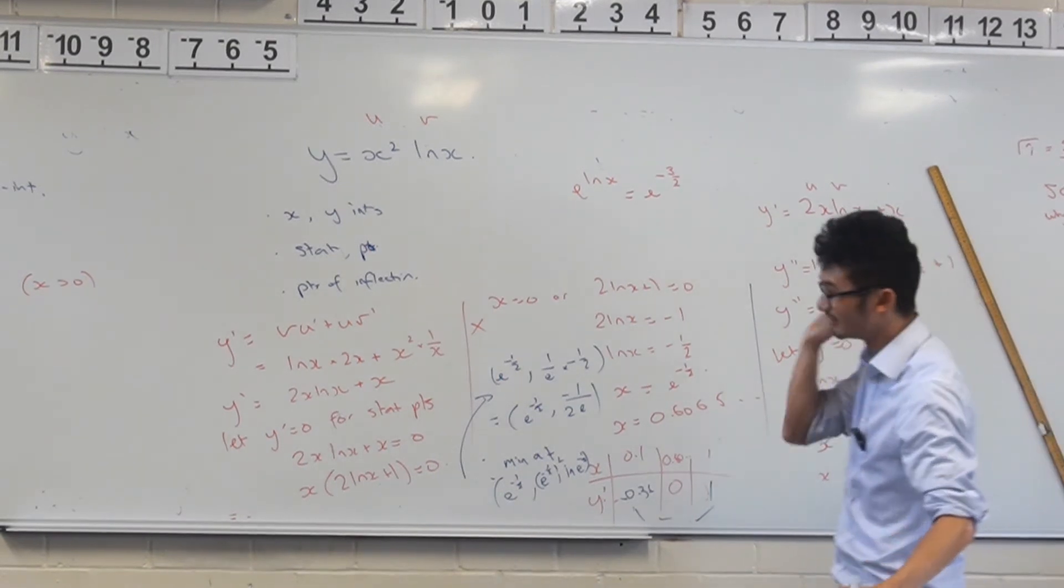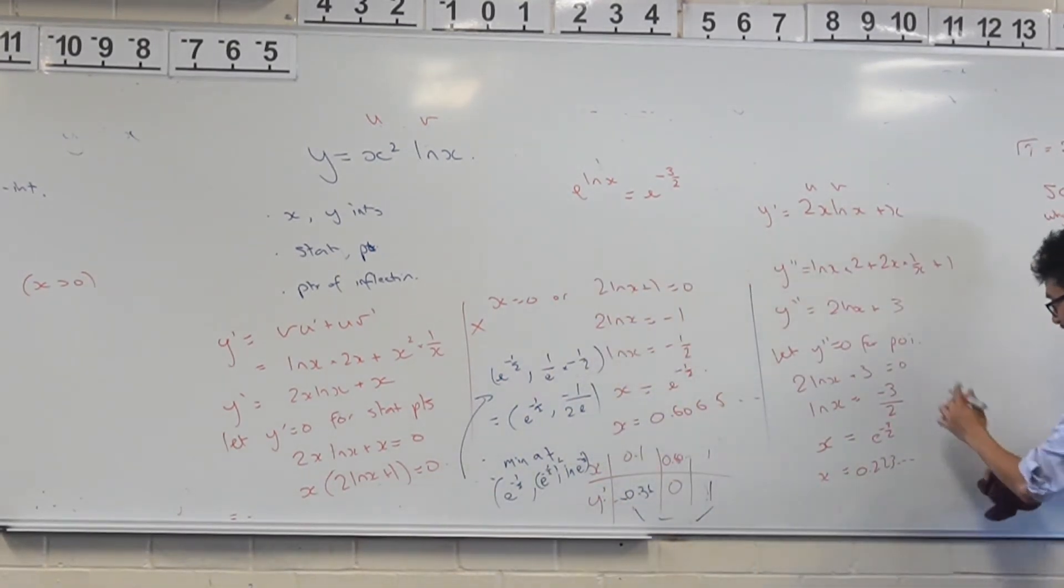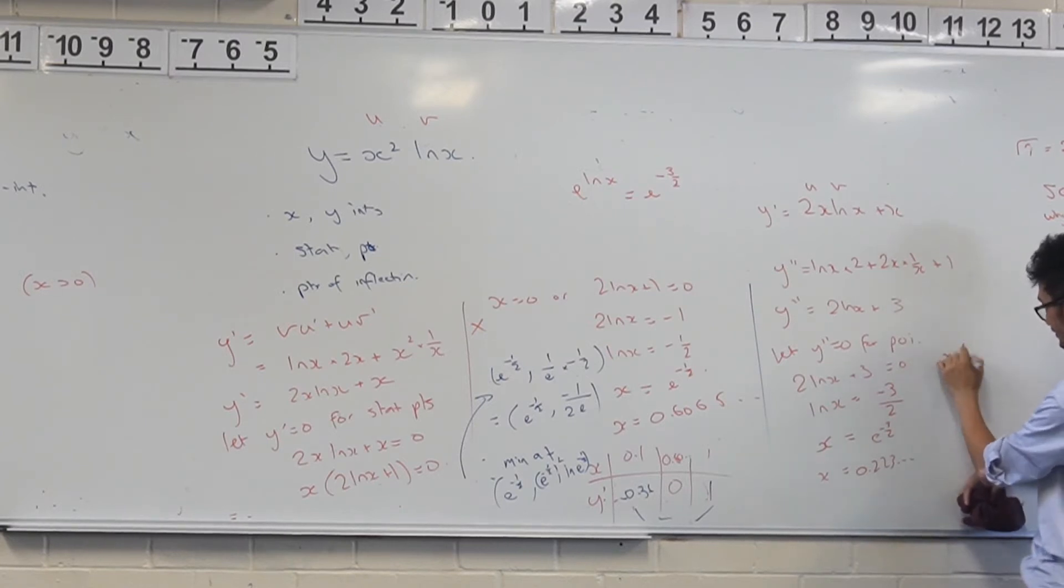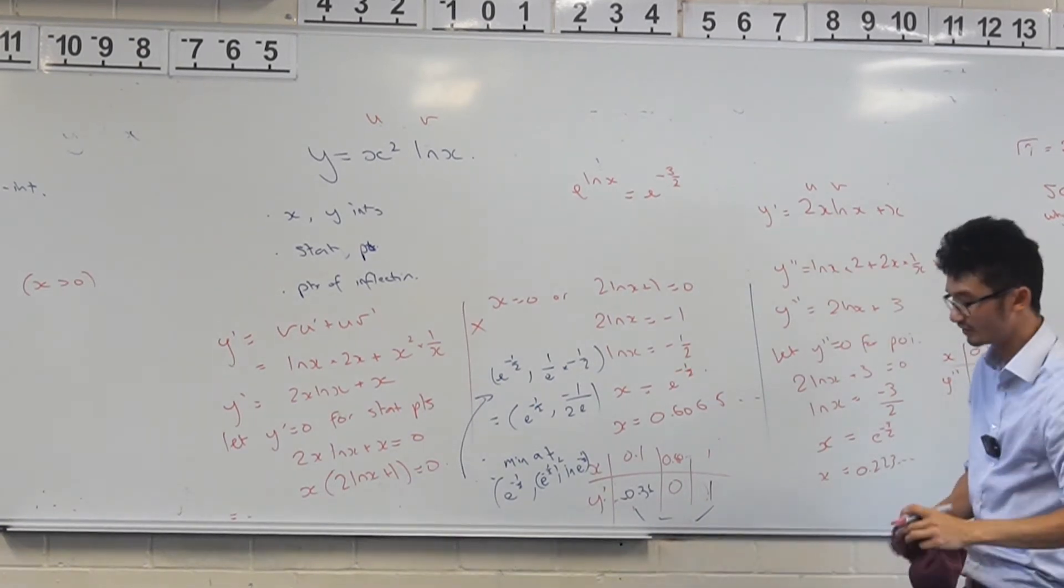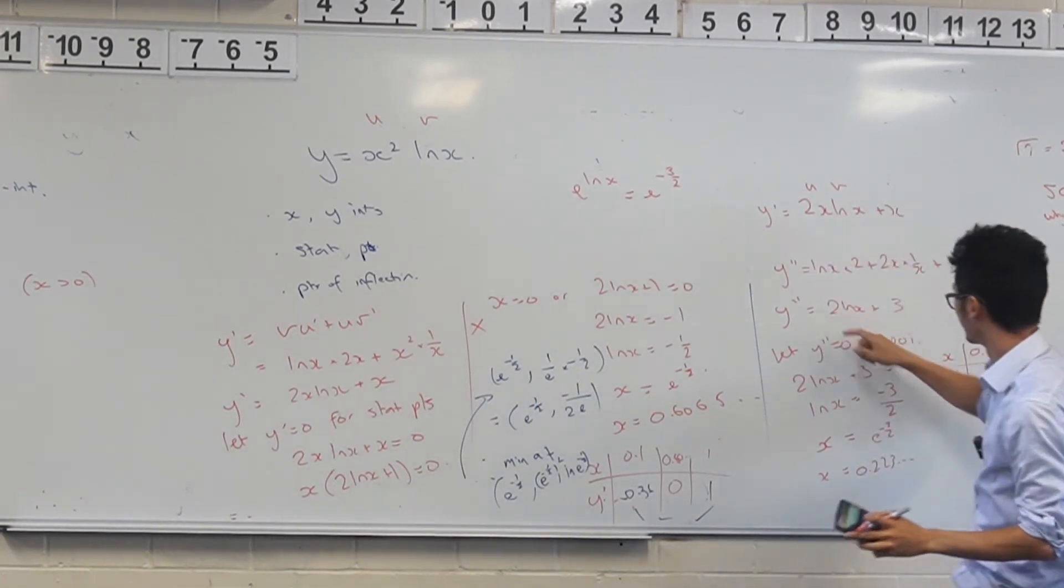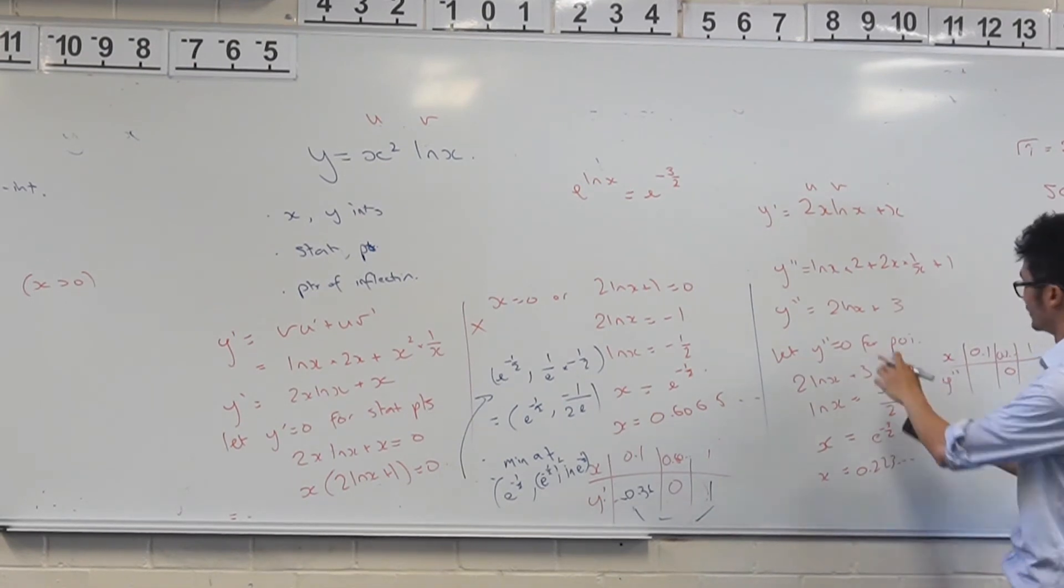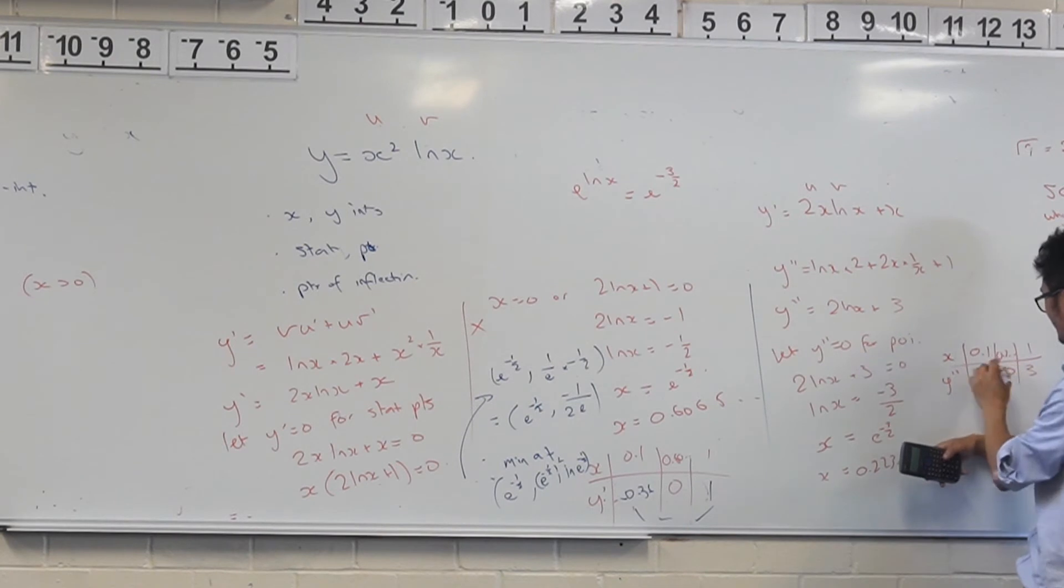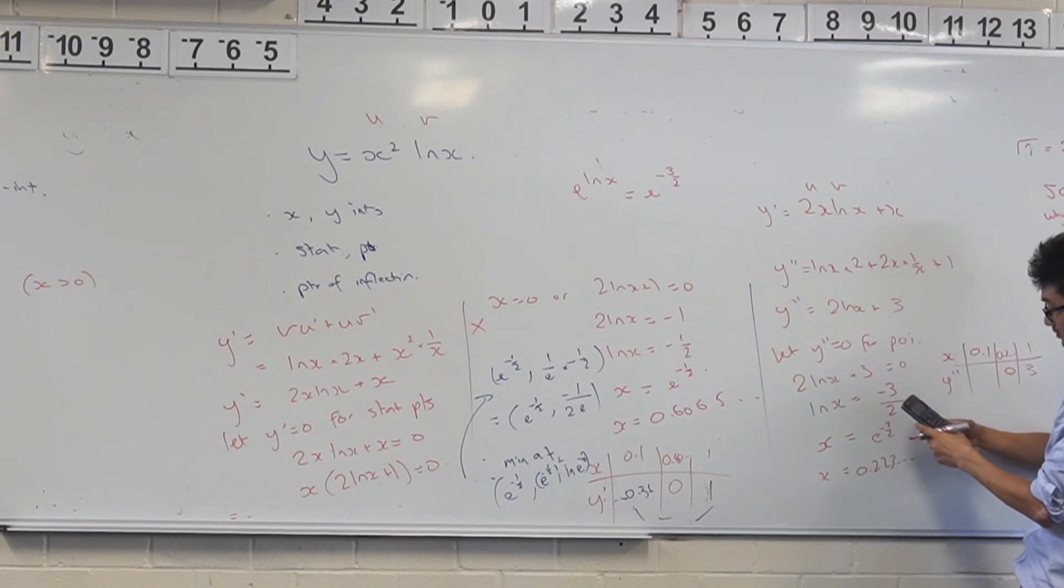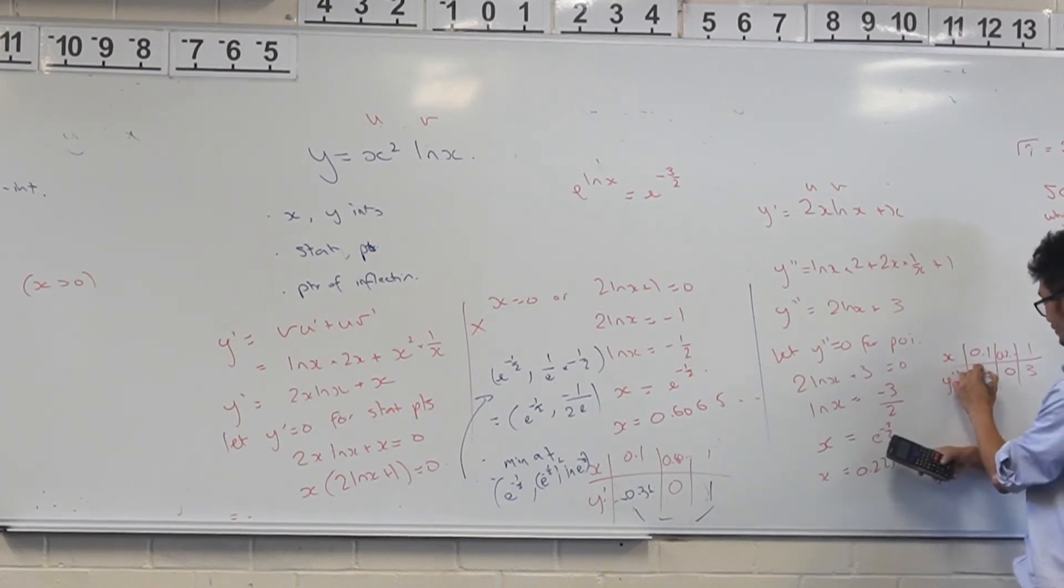Alright. And again, we test. We use the table method here. So we've got x and y double dash. That's 0. We'll test 1 and 0.1, I guess. And put it back now into this guy here. So we've got... That's going to be 2 times 0. That's going to be 3 again. And this one will be negative 1.6.